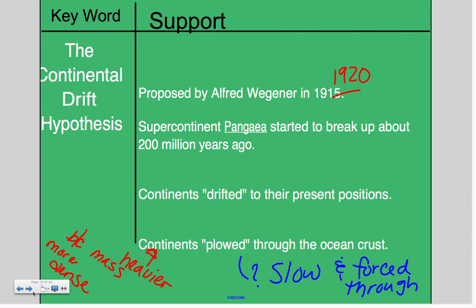Some continents plowed through the ocean crust. Plow means that it is a slow and forceful movement. This movement through the ocean crust is because the masses that moved through were more dense than the ocean, so this would have been extremely dense continents.